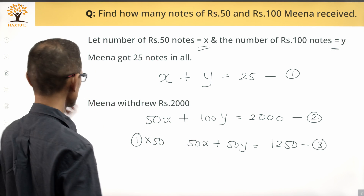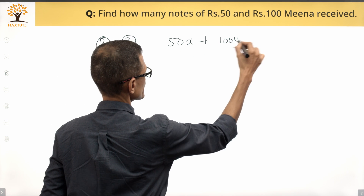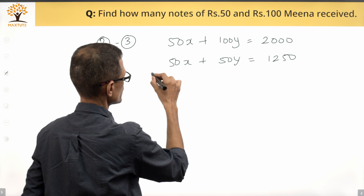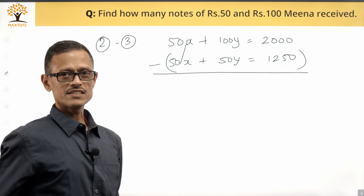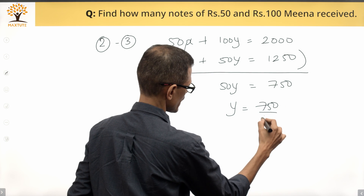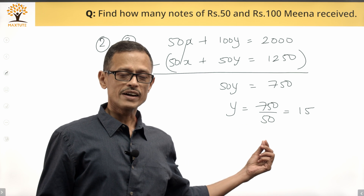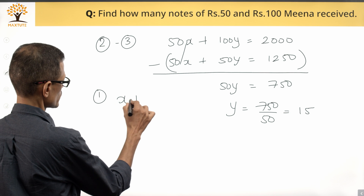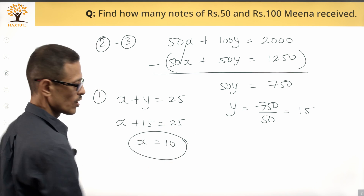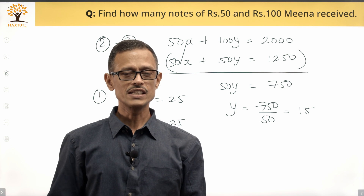Now I'll subtract equation 3 from equation 2. Equation 2 is 50x plus 100y equals 2000; equation 3 is 50x plus 50y equals 1250. The 50x terms cancel, leaving 50y equals 750, so y equals 15. Substituting y equals 15 into equation 1 gives x plus 15 equals 25, so x equals 10. She got 10 fifty-rupee notes totalling 500 rupees and 15 hundred-rupee notes totalling 1500 rupees, adding up to 2000 rupees.